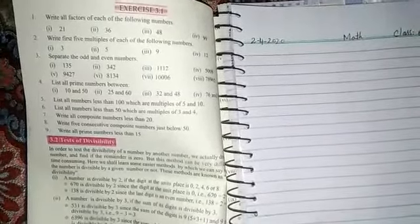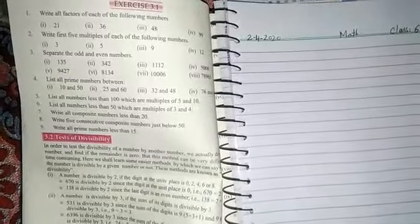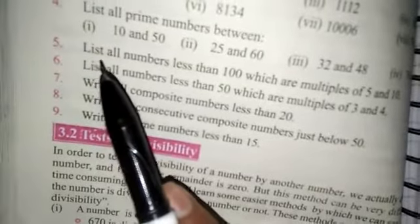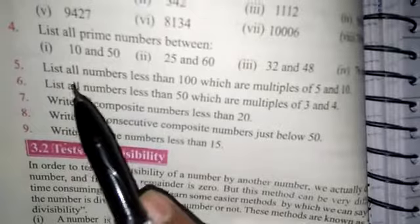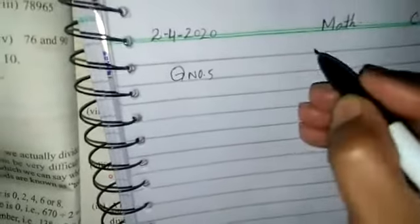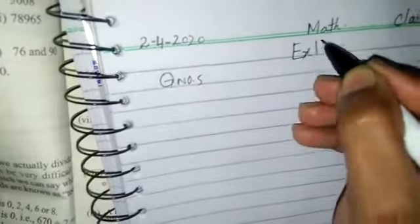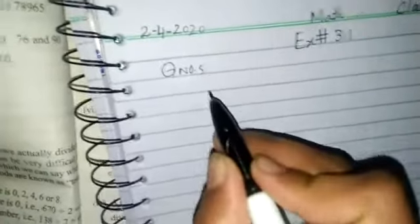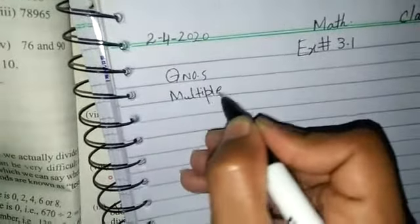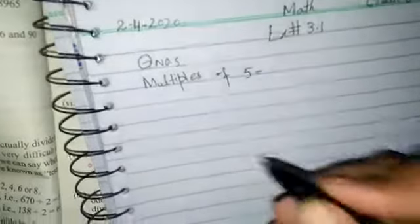Assalamualaikum, sixth class. I am your math teacher. Today we are doing Exercise 3.1 of the chapter Factors and Multiples. We will start from question number 5. Question number 5 is: list all numbers less than 100 which are multiples of 5 and 10. Exercise 3.1, question number 5: write multiples of 5 and 10 less than 100.